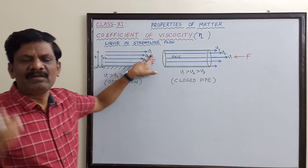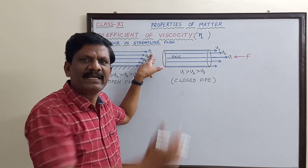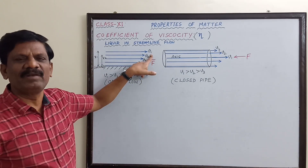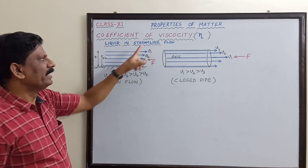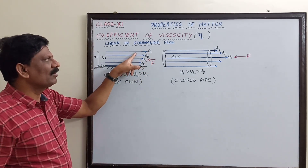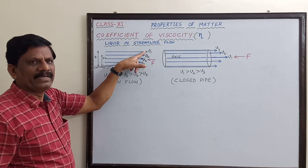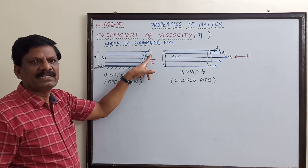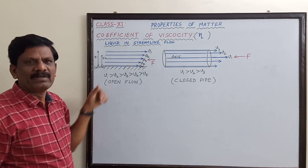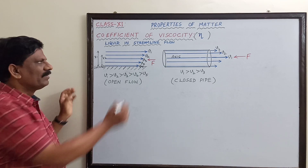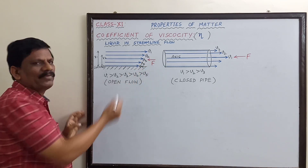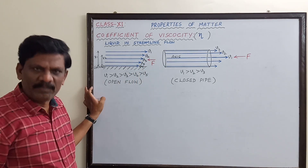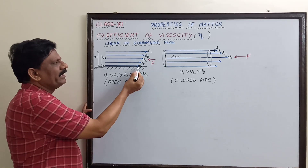will flow with the greatest velocity — the highest velocity belongs to the top layer. The layer just next to it will have a little lesser velocity, and subsequently the velocity of the different layers decreases from top to bottom.